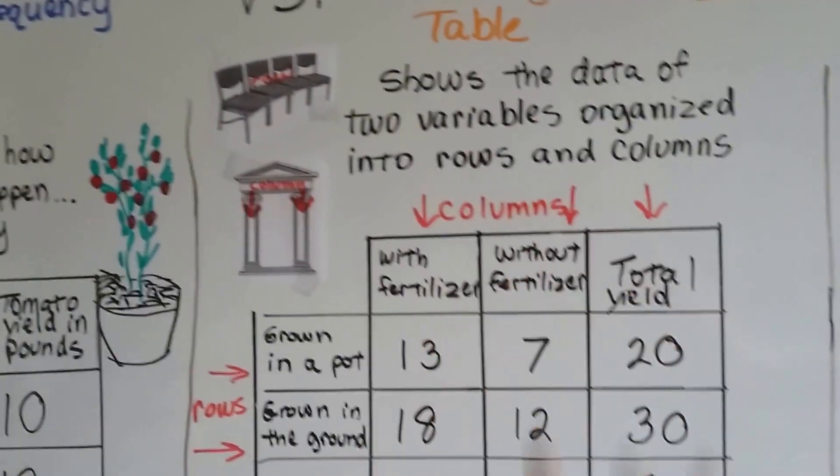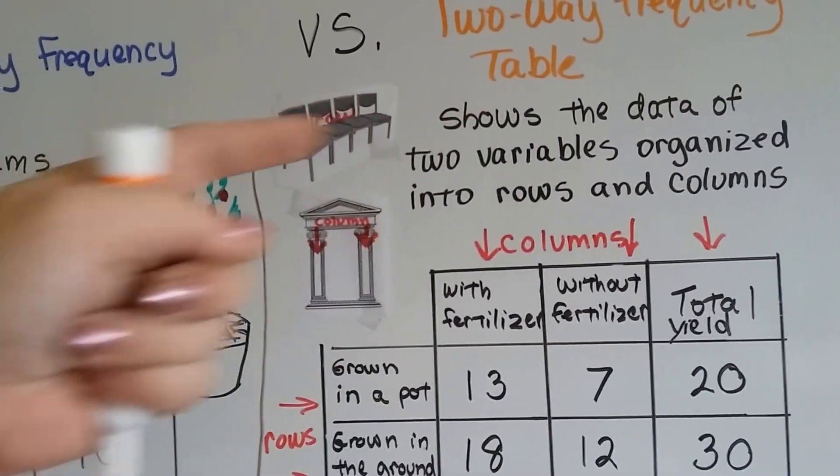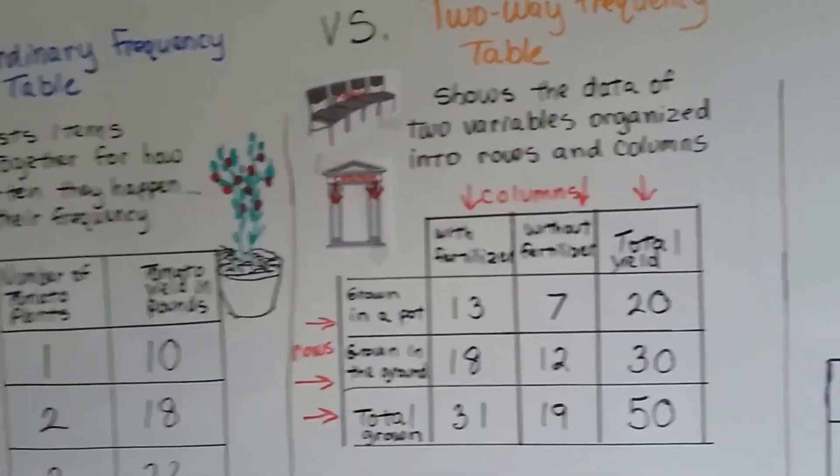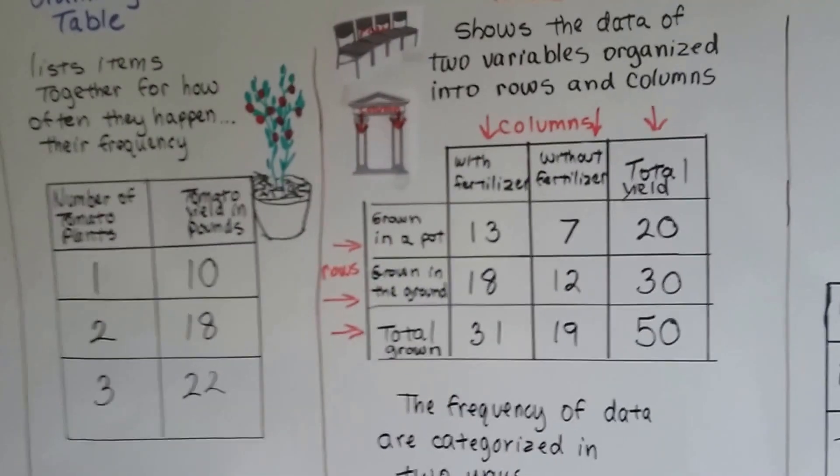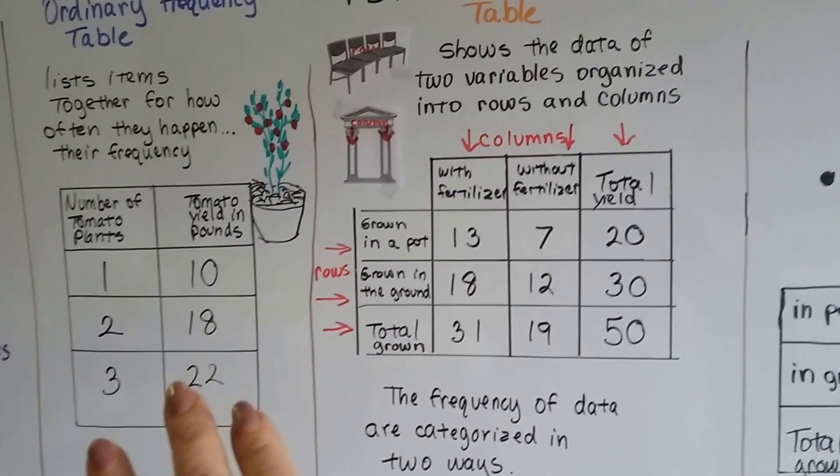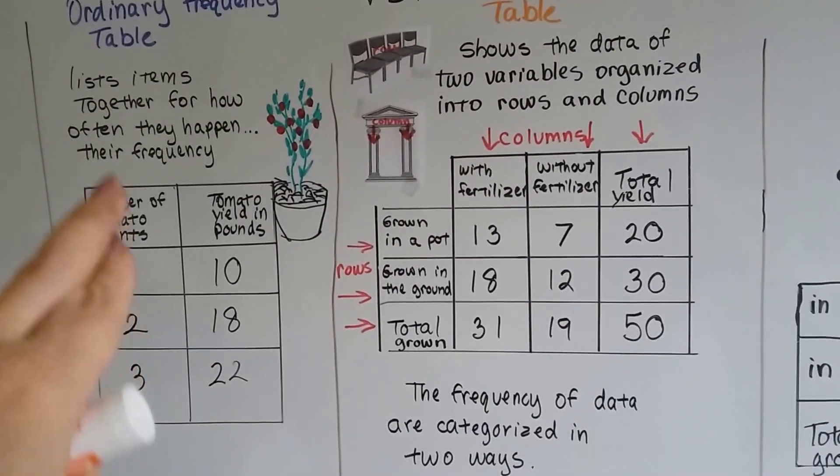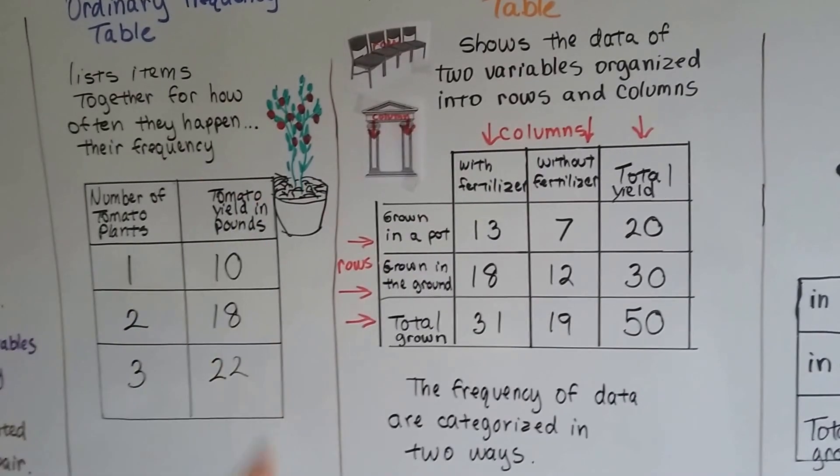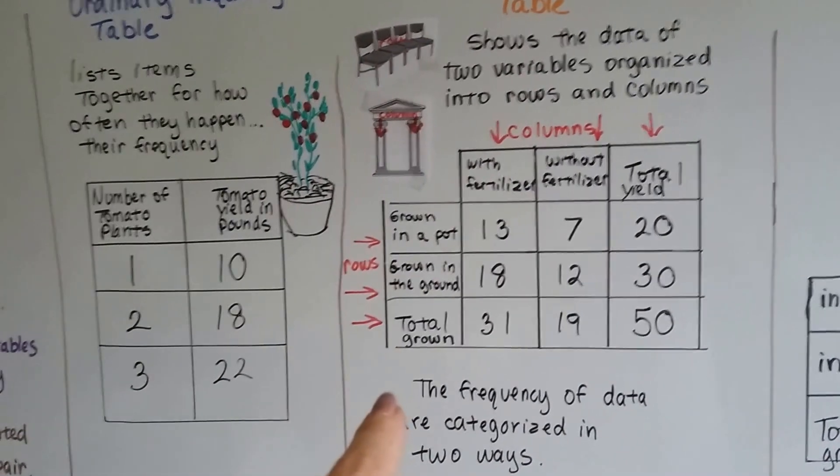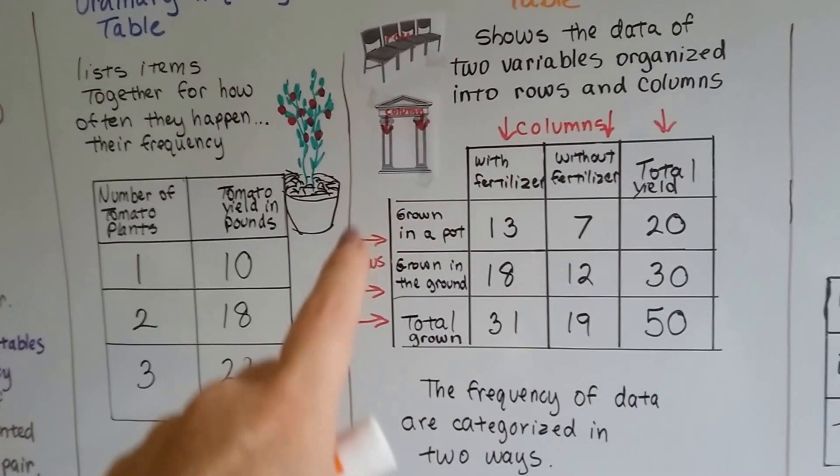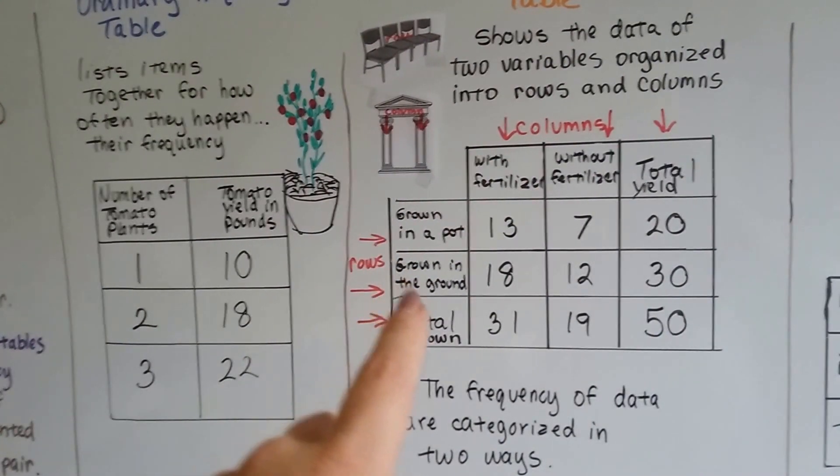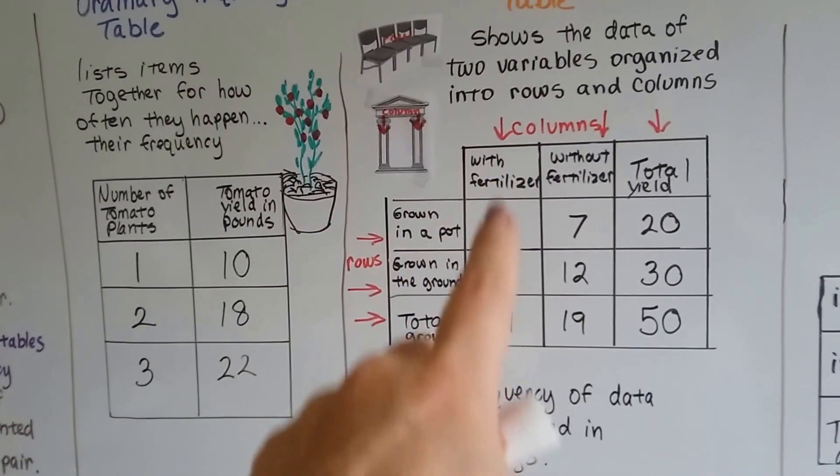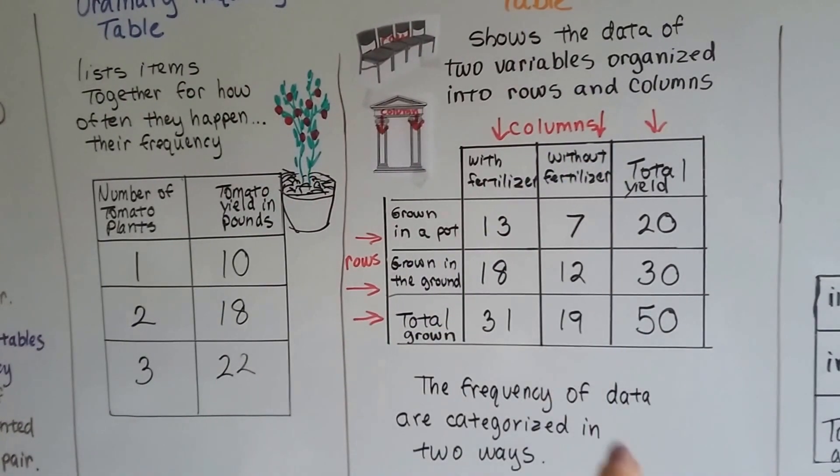See, up and down. And the rows are going horizontal, side by side, like the rows in a theater. So, when we compare these two tables, we went from just saying the number of tomato plants to how many pounds he got. Now we're going to say these tomato plants were grown in a pot, these plants were grown in the ground, these were grown with fertilizer, and these were grown without fertilizer.